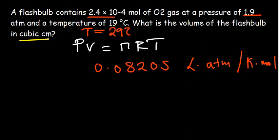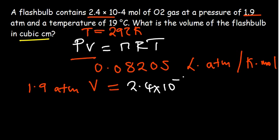We need to find the volume, everything else is given. Pressure has been given to be 1.9. We substitute - our volume is what we're trying to find - equal to the number of moles we've been given: 2.4 by 10 to the power minus 4 moles.